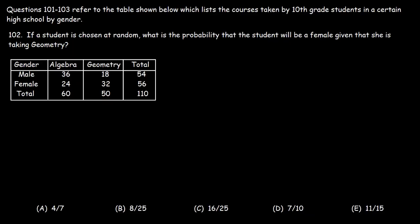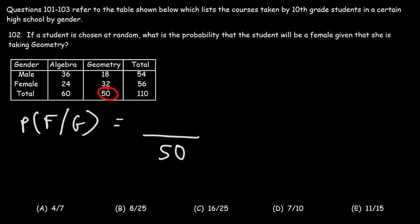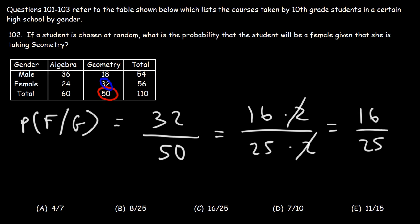Number 102. If a student is chosen at random, what is the probability that the student will be a female, given that she is taking geometry? This is a conditional probability question. We need to find out how many students in total are taking geometry — that's 50 students. Out of those 50 students, how many are female? That is 32. So the probability is 32 out of 50, which simplifies to 16 out of 25. Answer choice C is the right answer.